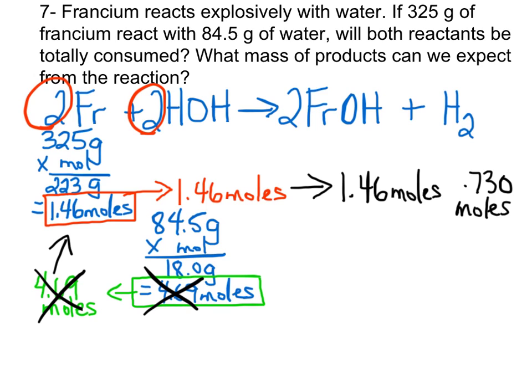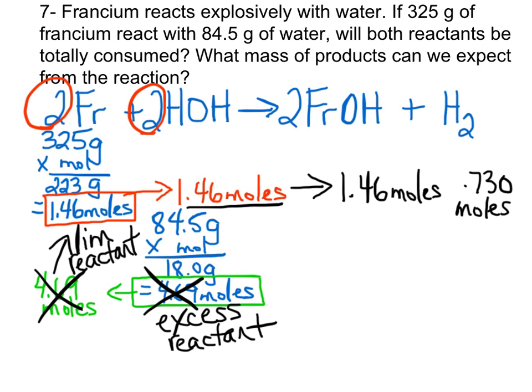So francium becomes my limiting reagent or limiting reactant because I didn't have the 4.69 moles necessary to do the line in green. Water becomes my excess reactant or excess reagent because I had 4.69 moles but I decided instead to follow the ratio where I was only going to react 1.46 moles.